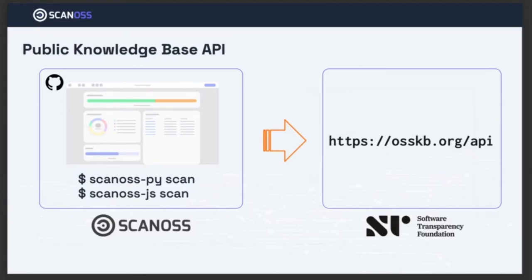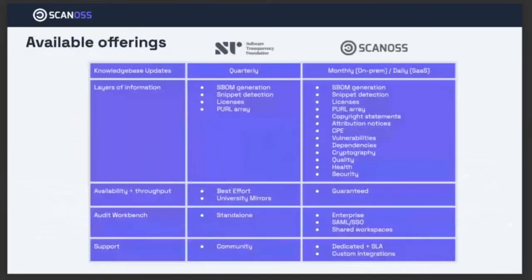ScanOSS also offers dedicated data instances and subscriptions, where you configure a dedicated endpoint and API key — the software is the same, just pointing to a supported endpoint. There is a free tier offered by the Software Transparency Foundation and mirrors, and a paid tier offered by ScanOSS with guaranteed availability and throughput, plus extra layers of information beyond regular SBOM identification — things like cryptographic algorithms used for export control or quality health metrics, which are important for large companies but not needed to create a basic software bill of materials.